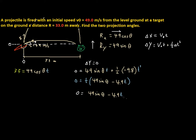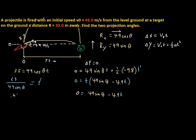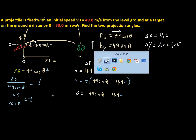We can see that there's a T here and a T here. So let's solve for T and see what happens. If we divide each side by 49 cosine theta, the left side would be 33 divided by 49 cosine theta is equal to T. And this simplifies — 33 divided by 49 is 0.67 — so 0.67 over cosine theta is equal to T.